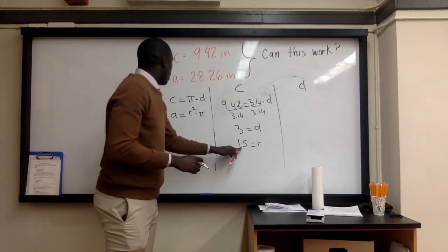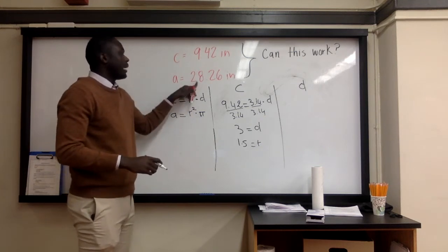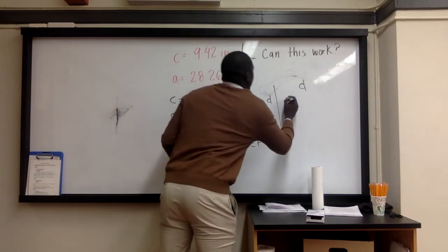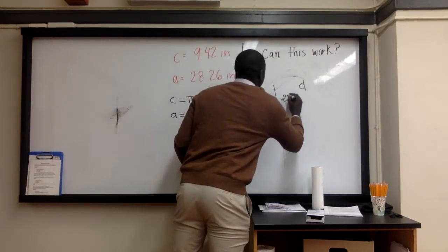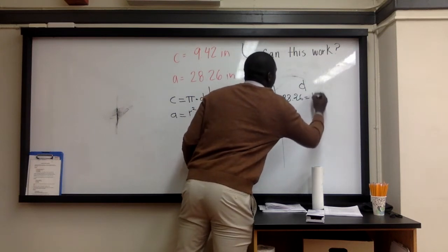Now, if I do R to the second power times π, I don't think I'll get any number close to 28.26. Let's prove it. So area, which is 28.26, is equal to R squared times π.